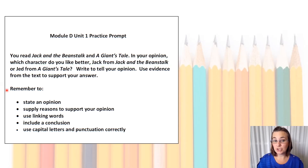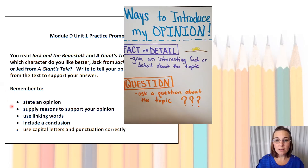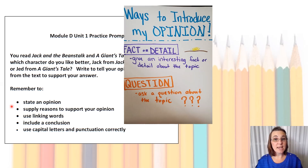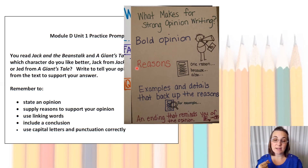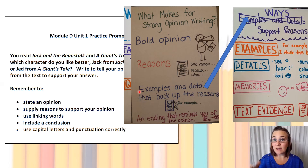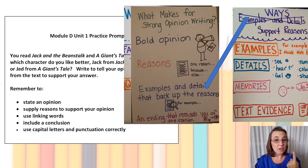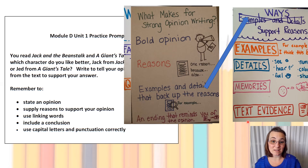The prompt says: remember to state an opinion. We talked about how we can introduce our opinion by giving a fact or a detail about the topic, or adding a draw-in question, then we state our big, bold opinion. Next, it says to supply reasons to support your opinion. When we stated our big, bold opinion, we told why we felt that way. Not only do you tell the reasons, you also give examples and details to back them up. You can use an example, a detail, a memory, or text evidence to support your answer — and text evidence is going to be really important.